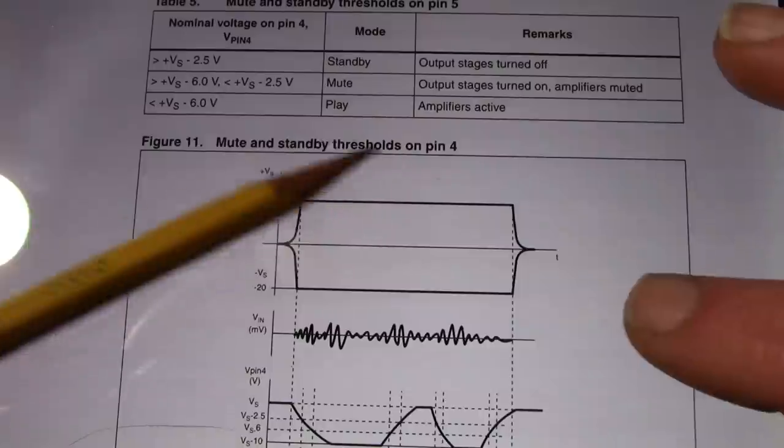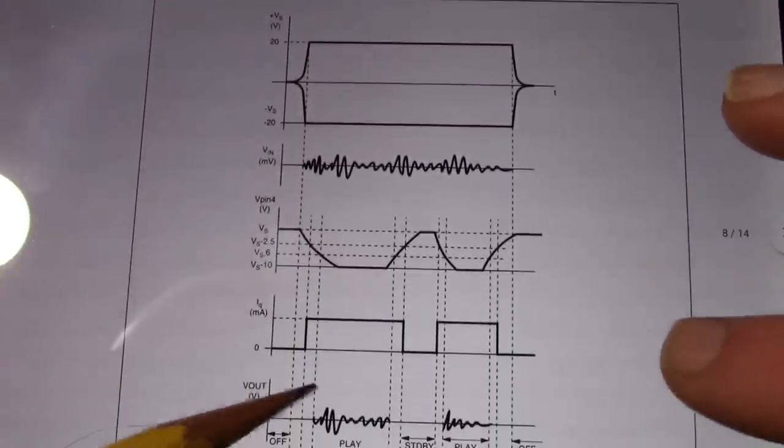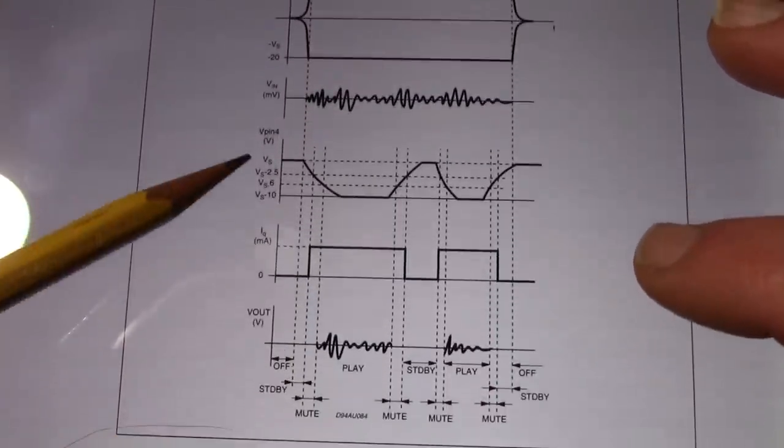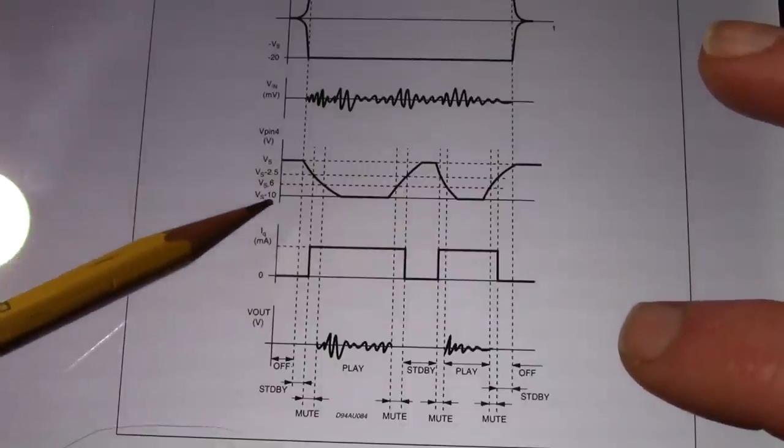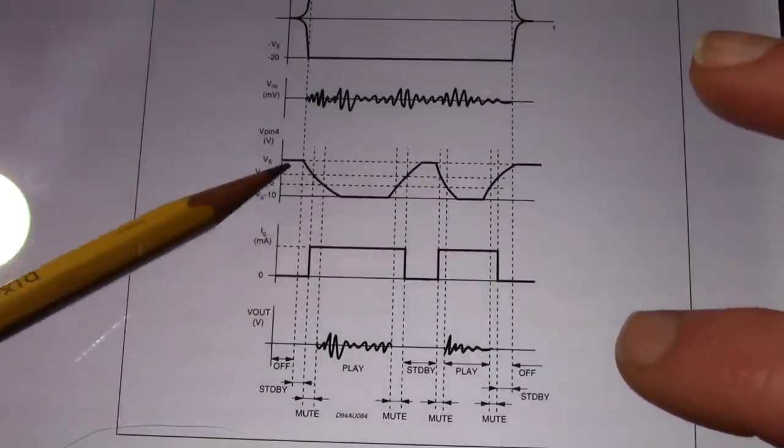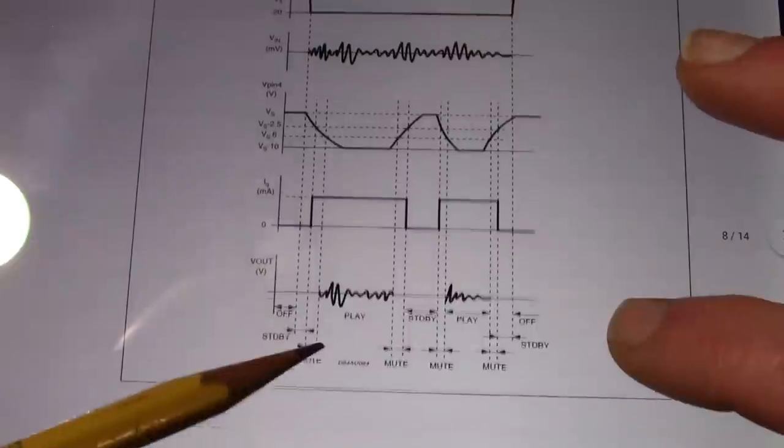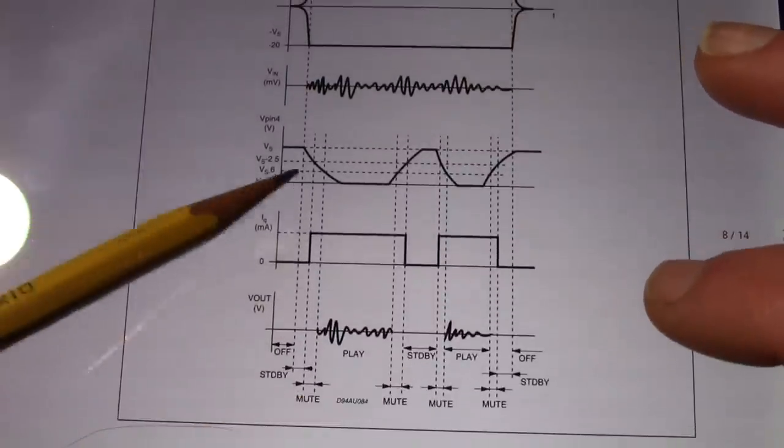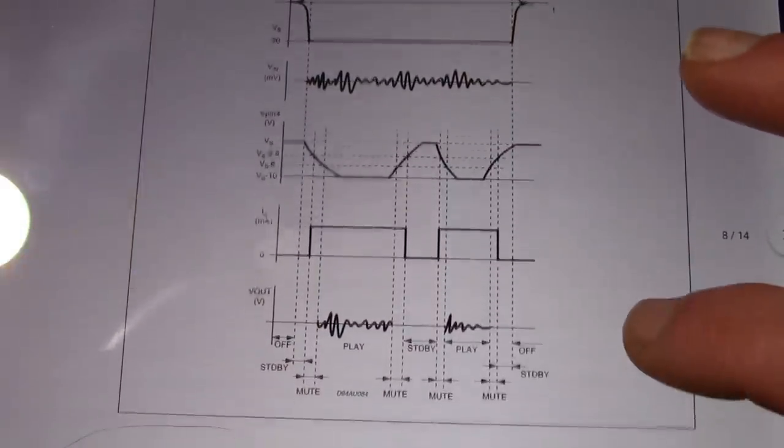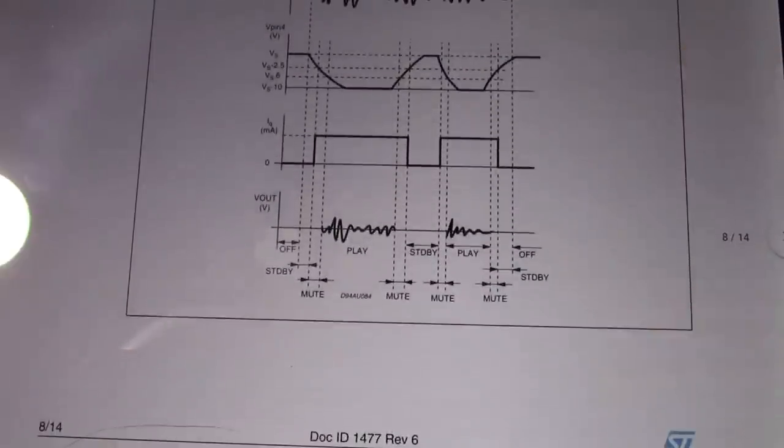This here discusses the mute and standby mode. They do it all with one pin. So they use different voltages to set the mute, standby, and play modes. And what I've done is I made a better diagram. It's a little easier to understand.